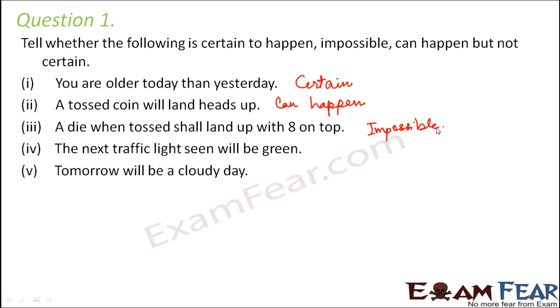The next traffic light seen will be green. Now this is again can happen but not necessarily because the next traffic light could also be yellow, it could also be orange, it could be green. So we are not very sure whether it will be green or not. Tomorrow will be a cloudy day. That's again something which can happen. We are not very sure it will be cloudy or sunny, so it is not very certain to happen.